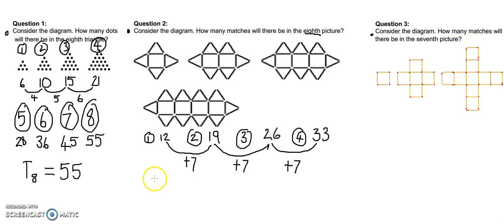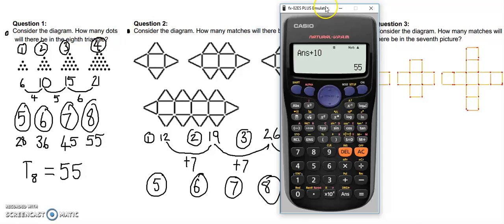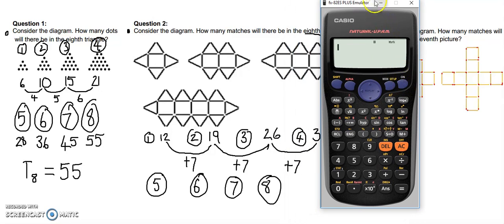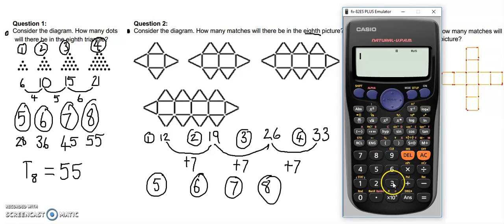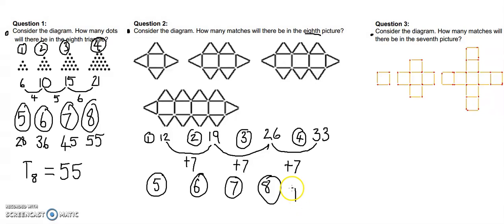So, let's find out the fifth, sixth, seventh, and eighth term. Now, I don't need to write them all down, so I'm not going to. I'm going to start with the thirty-three, which is the fourth term. Thirty-three, plus seven, gives me the fifth term, plus seven, gives me the sixth term, plus seven, gives me the seventh term, and plus seven, gives me the eighth term. So, term eight has a value of sixty-one. Not so bad.